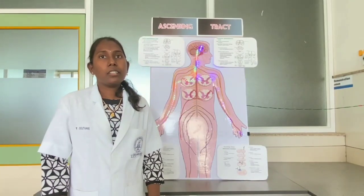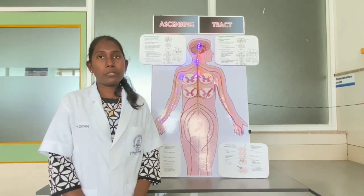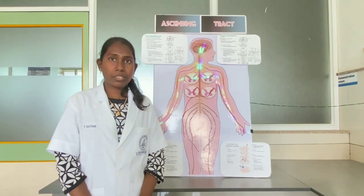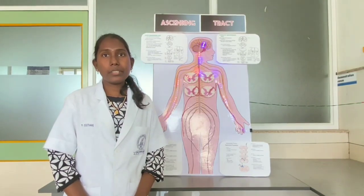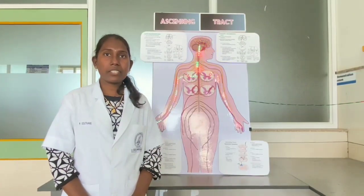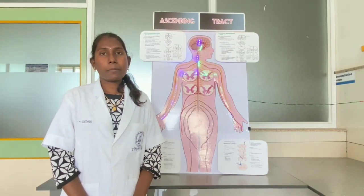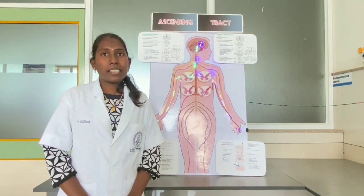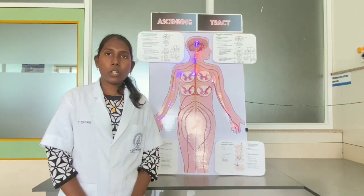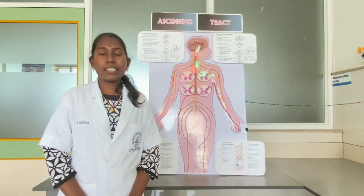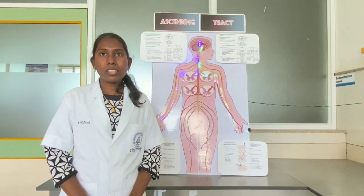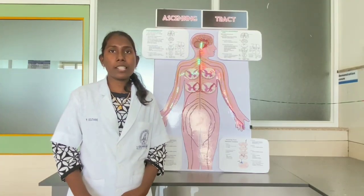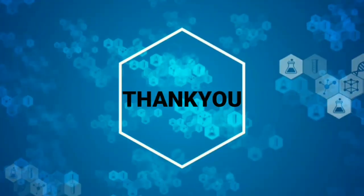Effect of lesion: loss of fine tactile sensation, however crude touch sensation is normal. Loss of tactile localization. Loss of two-point discrimination. Astereognosis — the inability to recognize an object by touch while closing the eyes. Loss of proprioception — the inability to appreciate position and movement of different parts of the body. Lack of ability to differentiate the weight of different objects. Sensory ataxia — a condition characterized by uncoordinated, slow, and clumsy voluntary movements due to loss of proprioception.